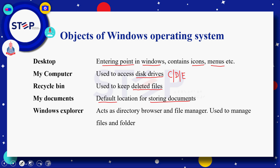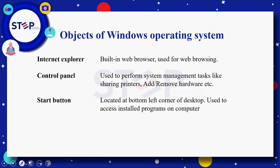Windows Explorer directory browser کے طور پر بھی کام کرتا ہے اور file manager کے طور پر بھی۔ اس کا کام آپ کے computer کے اندر جتنی بھی files اور folders ہیں ان تمام کو manage کرنا ہوتا ہے۔ اس کے بعد Internet Explorer ہے — Internet Explorer ایک built-in web browser ہے اور اس کا main مقصد web browsing perform کرنا ہوتا ہے۔ Control panel — آپ کے computer کے اندر جتنے بھی system management سے related tasks ہیں، for example printer share کرنا یا کوئی نیا hardware add یا remove کرنا، اس کے لئے ہم control panel کو use کرتے ہیں۔